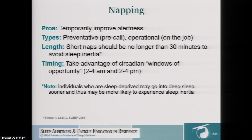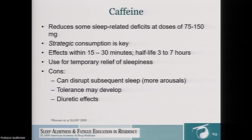Caffeine decreases the effects of adenosine and helps you stay up a little bit longer. Its half-life is about six hours. If you're drinking coffee right before you're supposed to go home — say you're on night float, get off at 7 AM and drink coffee at 5:30 AM — it may be difficult to fall asleep when you get home. Caffeine works best if used early or midway through shifts, or just before work.